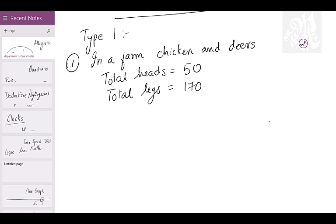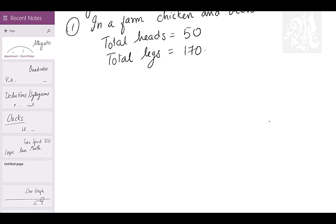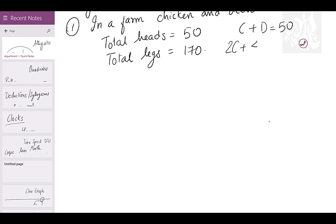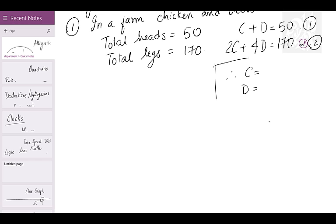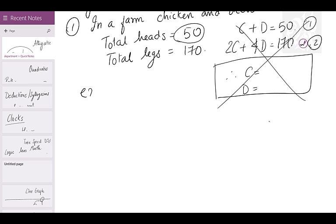It's a very straightforward one. You can do it many ways. First, form equations: let C be chicken and D be deer. C plus D equals 50. Chicken has 2 legs, deer has 4 legs, giving 2C plus 4D equals 170. Solving these equations gives you the number of chickens and deer. Every step gets you half a mark, but there's no feeling — so we won't do it this way.